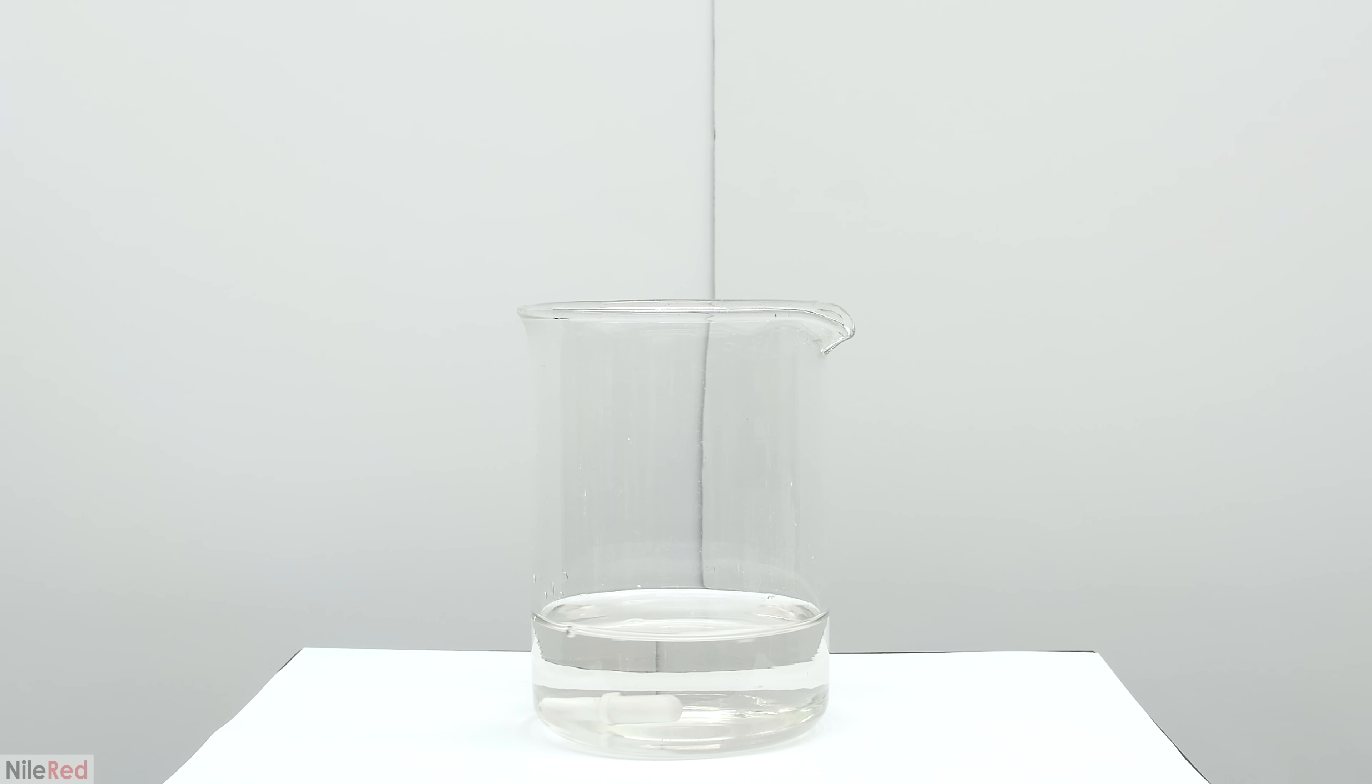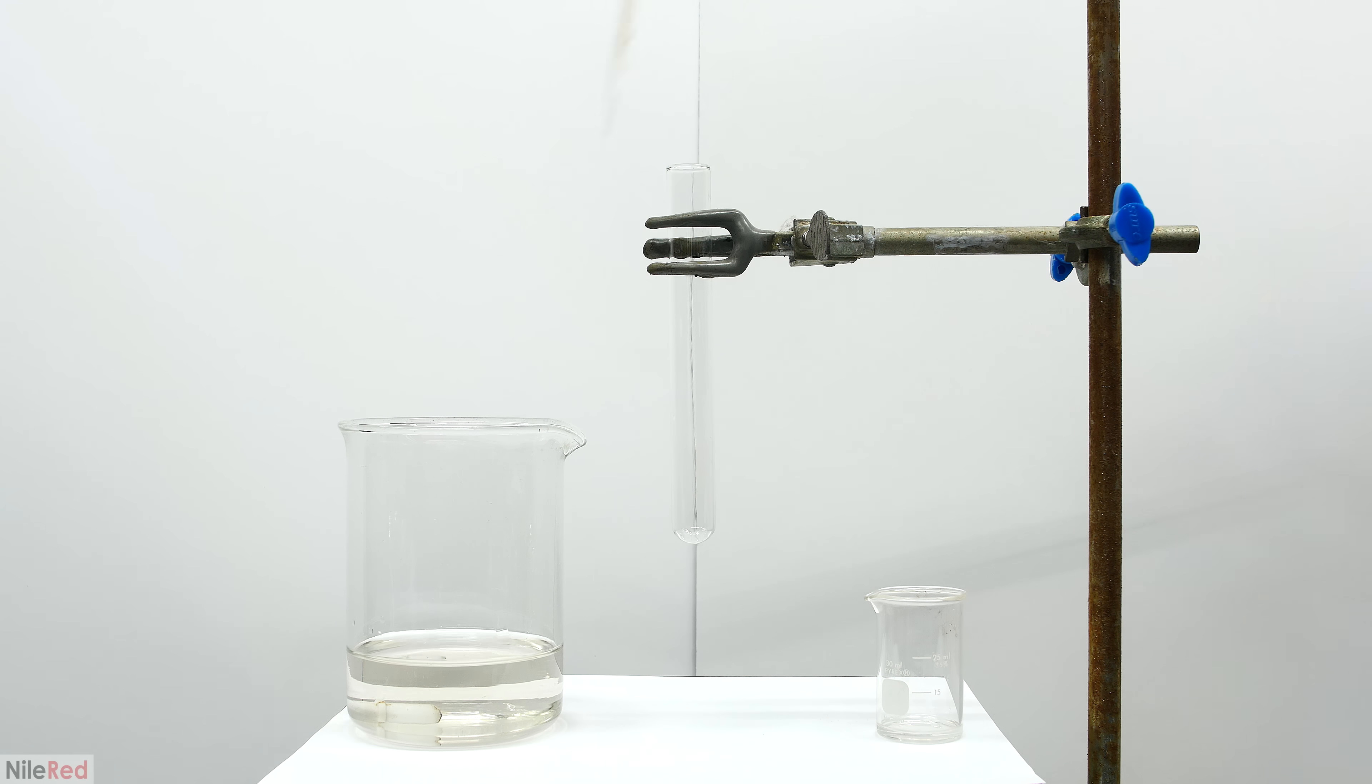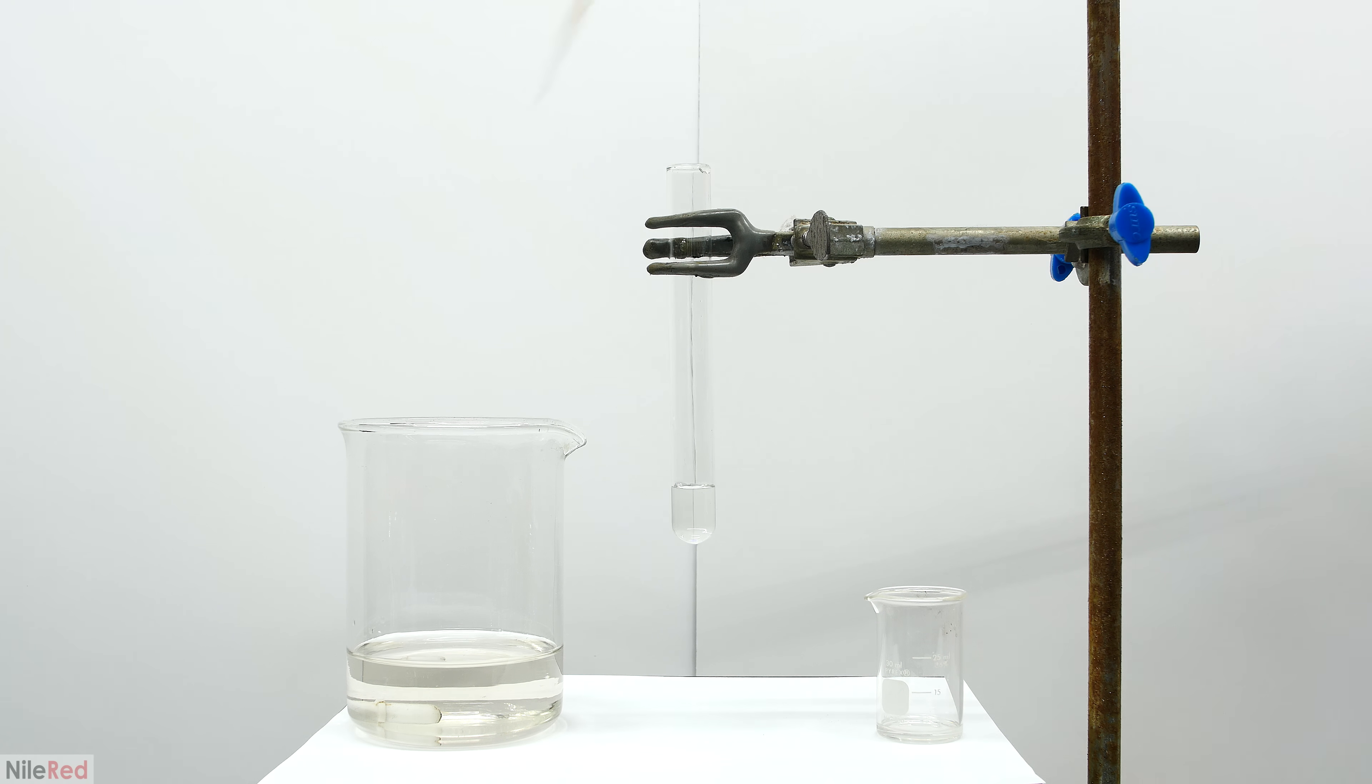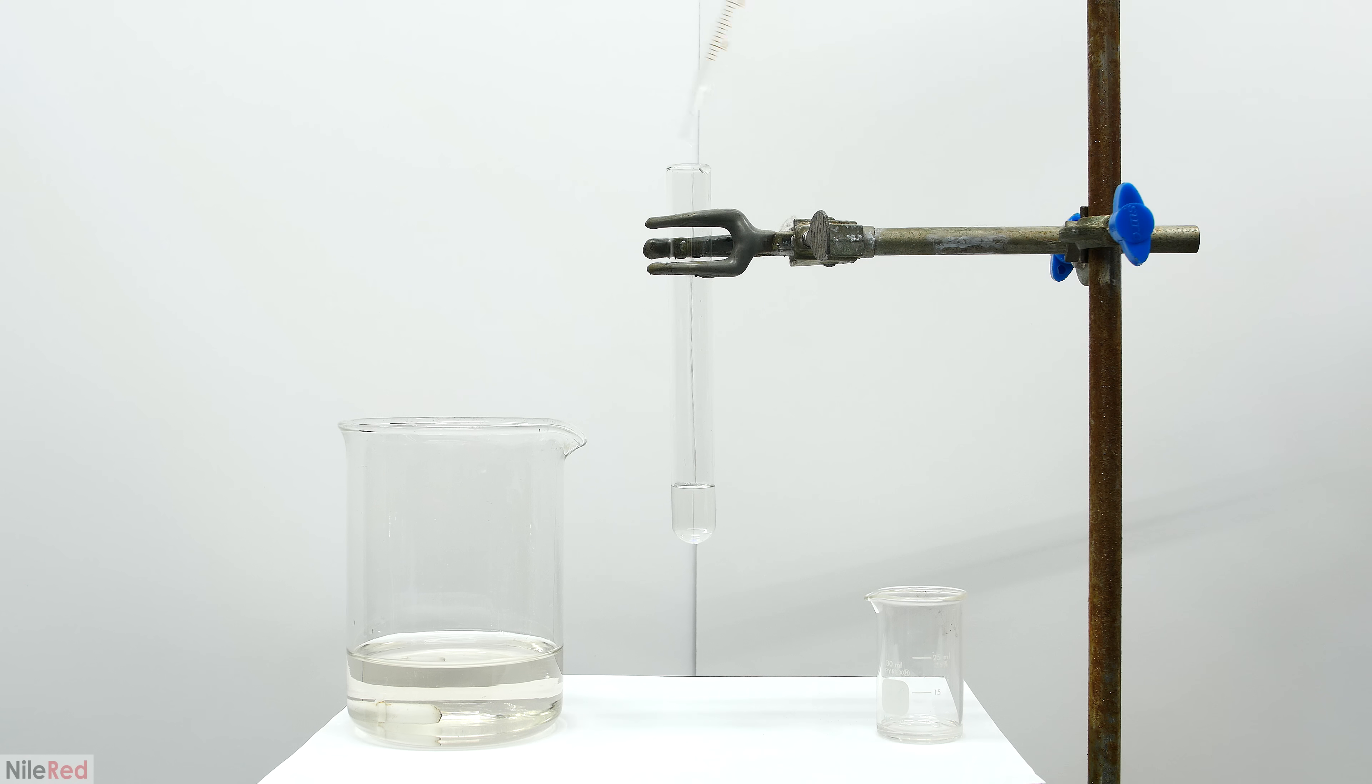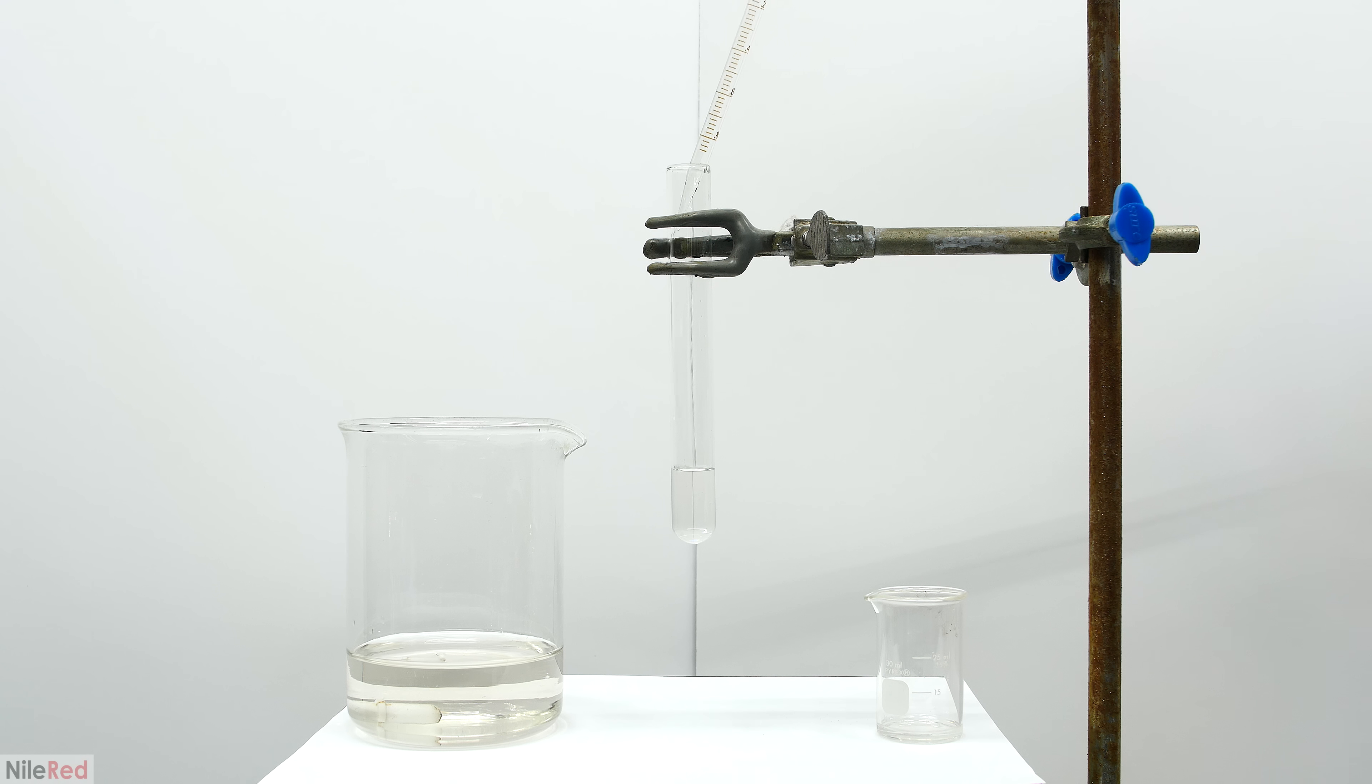To get things started, I prepare some fresh Tollens reagent. By the time I set up this little apparatus here, you can see that the solution has become a little bit discolored. If the unknown that we use is very dilute, this in theory could produce a false positive. The unknowns that I'm using are pure and undiluted though, so it really shouldn't be an issue.